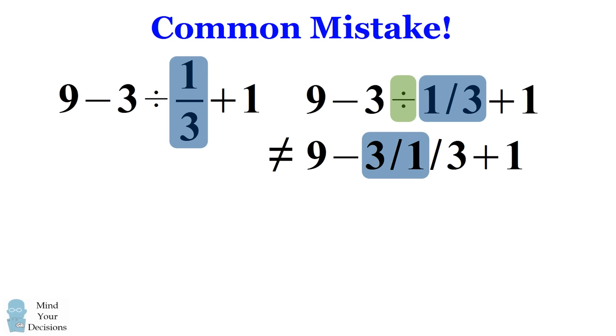It's going to evaluate the 3 divided by 1 first. Then it's going to divide 3 divided by 3 and then it's going to do 9 minus 1 plus 1 which will give you a result of 9.